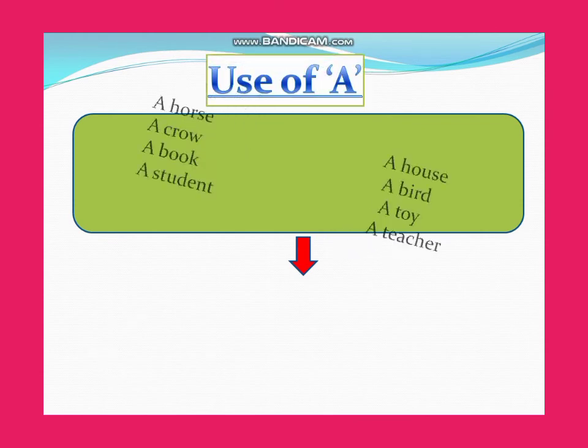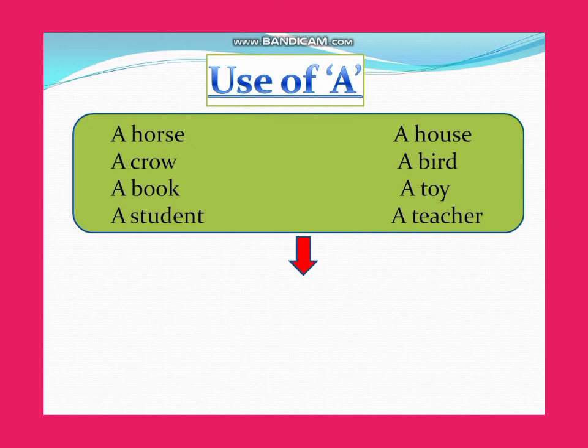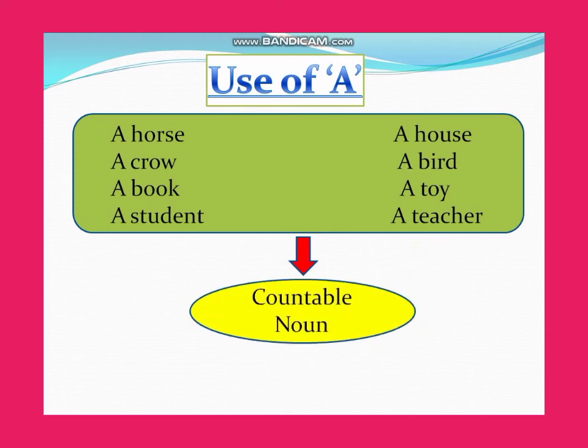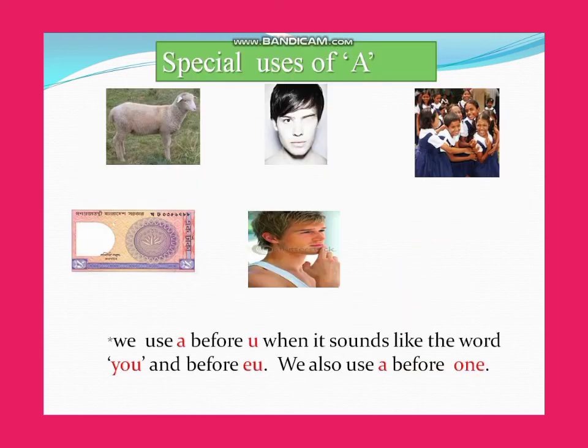Use of 'a': a horse, a crow, a book, a student, a house, a bird, a toy, a teacher. Here all are countable nouns.